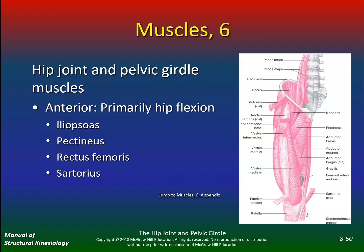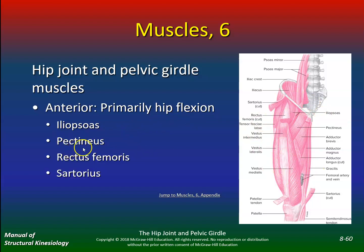So, hip joint and pelvic girdle muscles — what primarily does hip flexion? On exam 2, I might ask which of the following muscles does hip flexion except. In hip flexion, you have the iliopsoas, pectineus, rectus femoris, and sartorius.